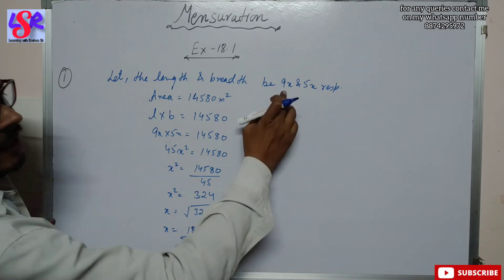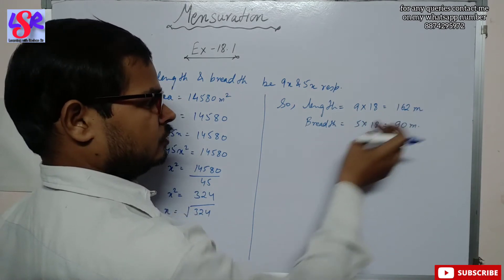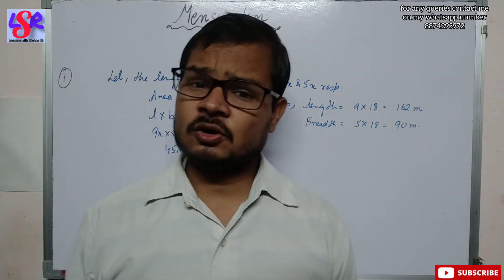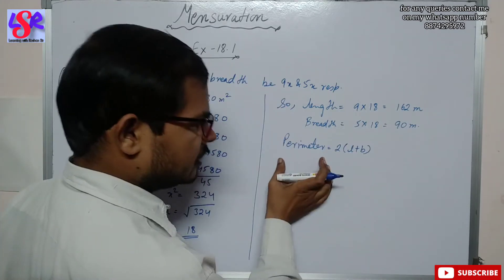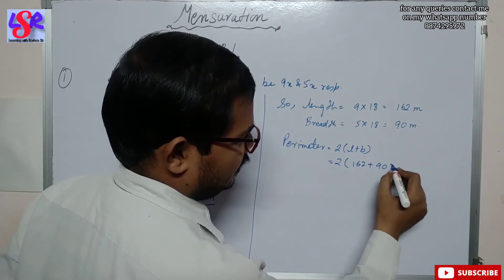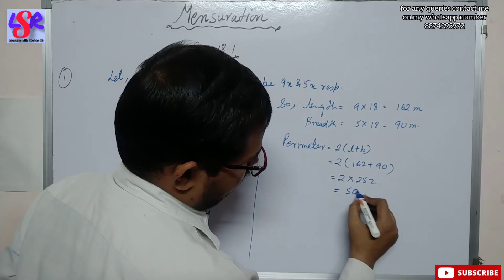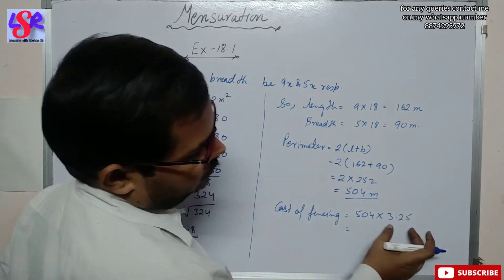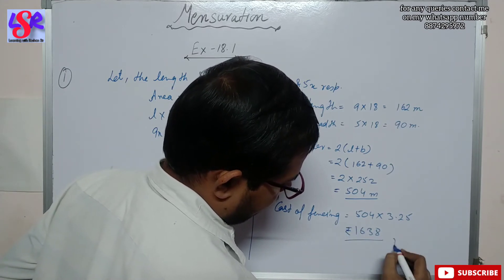Placing the value of x: length equals 9 into 18, that is 162 meters, and breadth equals 5 into 18, that is 90 meters. Fencing is done along the perimeter, so perimeter equals 2(L + B) equals 2 into (162 + 90) equals 2 into 252 equals 504 meters. The cost of fencing is 504 into 3.25, which equals rupees 1,638.